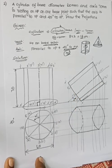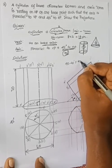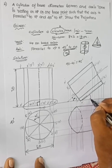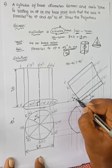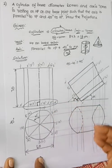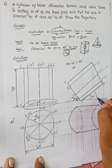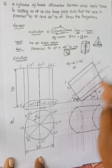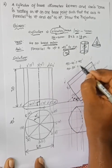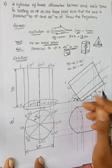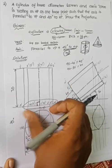Since the axis is inclined at 45 degrees, the base makes an angle of 90 minus 45 = 45 degrees with HP. For example, if the axis were inclined at 30 degrees to HP, then the base would make an angle of 90 minus 30 = 60 degrees. This relationship helps us locate the base points correctly for the inclined position.